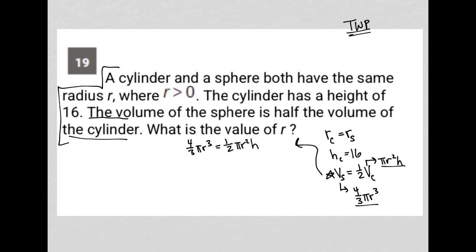Now next, I'm going to replace H with 16, because the question told me H is 16. So now I have four-thirds pi R cubed equals one-half pi R squared times 16. So now there's a lot of simplification I can do. I only have R as a variable. The question is asking for the value of R, so I'm in a good spot.